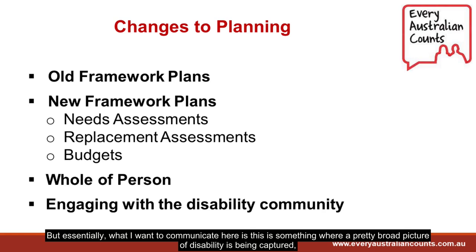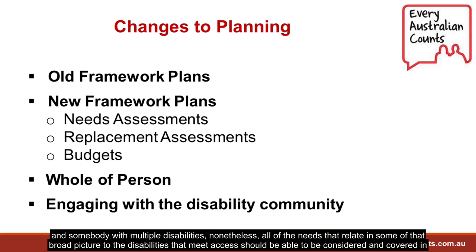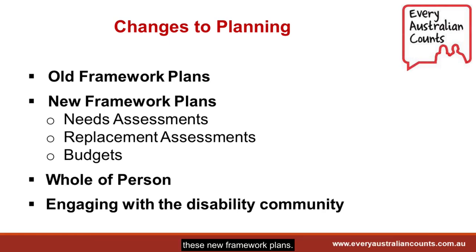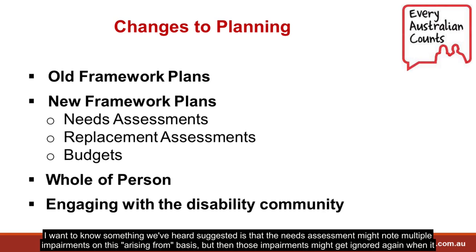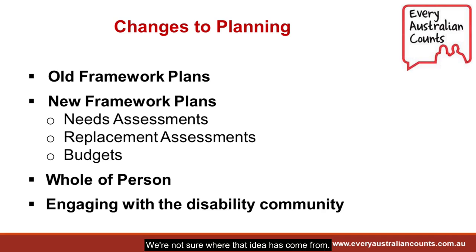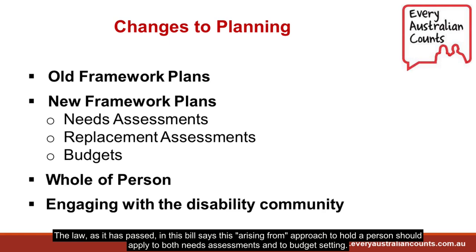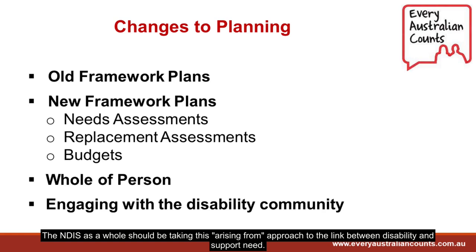Essentially what I want to communicate is this is something where a pretty broad picture of disability is being captured. Somebody with multiple disabilities — all of the needs that relate in that broad picture to the disabilities that meet access should be able to be considered and covered in these new framework plans. Something we've heard suggested is that the needs assessment might note multiple impairments on this 'arising from' basis, but then those impairments might get ignored again when it came to setting a budget. The law as it has passed in this bill says this 'arising from' approach to whole of person should apply to both needs assessments and to budget setting.